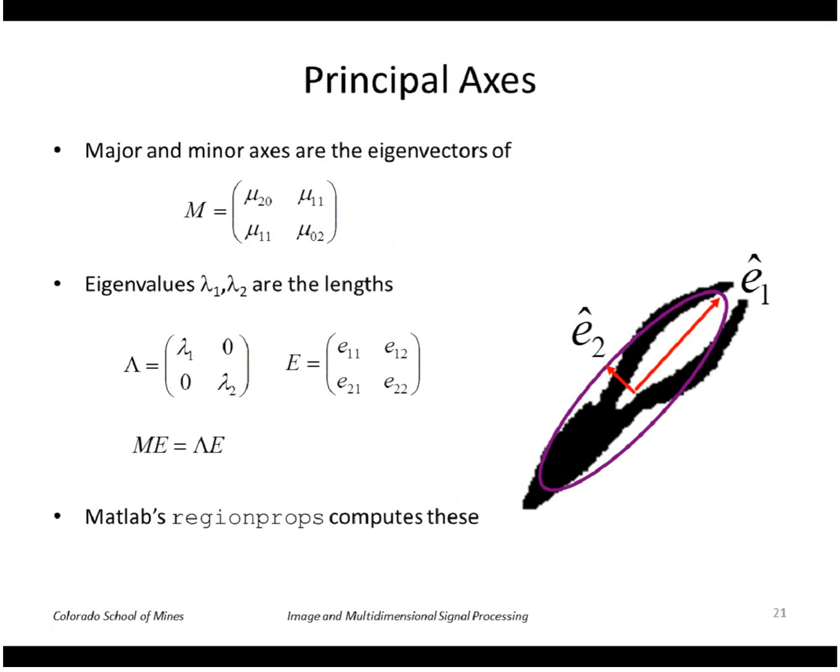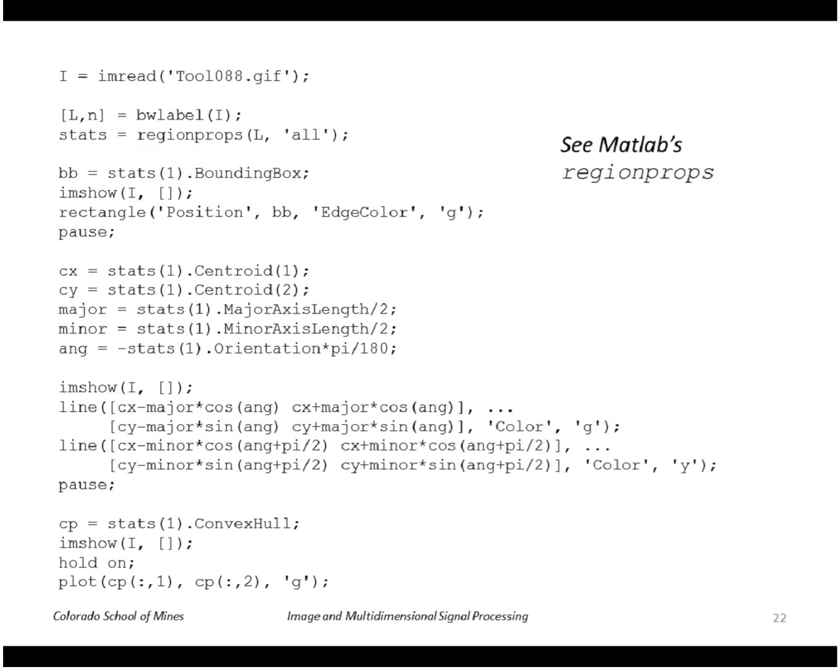So using these, we can compute things like the principal axes. So putting these central moments into a two by two matrix, μ_20, μ_11, etc. The eigenvalues are the lengths of the principal axes and the eigenvectors, which are these columns, are the directions of the principal axes. And MATLAB's region props computes these.